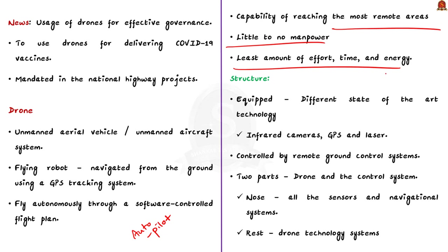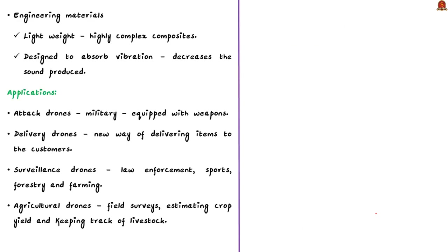Drones are equipped with state-of-the-art technologies such as infrared cameras, GPS and laser, and are controlled by remote ground control systems. An unmanned aerial vehicle system has two parts: the drone itself and the control system. The nose of the UAV is where all sensors and navigational systems are present. The rest of the body is full of drone technology systems since no space is required to accommodate humans. The engineering materials used in drones are very lightweight and highly complex composites designed to absorb vibration, which decreases the sound produced by these UAVs.